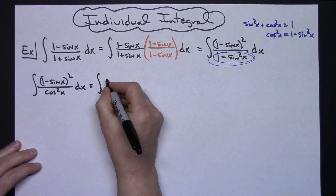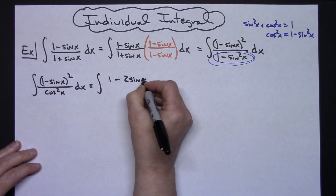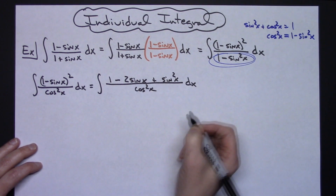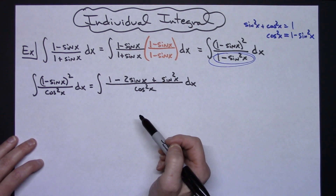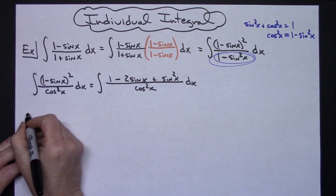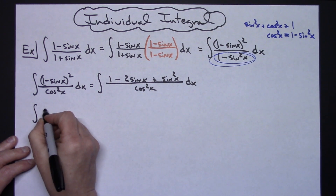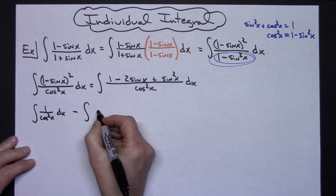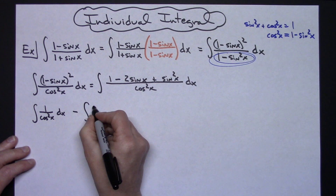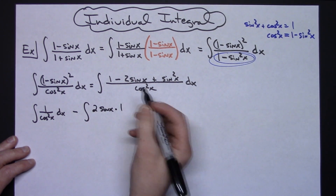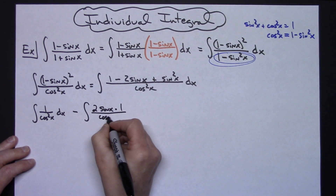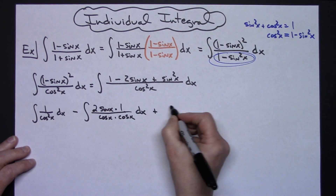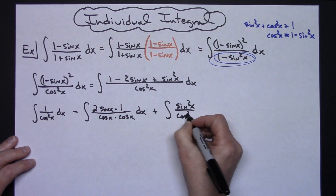Squaring the numerator gives 1 minus 2 sine x plus sine squared x, all over cosine squared x. Now I'm going to write these as three separate integrals. First, the integral of 1 over cosine squared x dx. Then, minus the integral of 2 sine x over (cosine x times cosine x) dx — writing it that way so I can see the trig identities. And then plus the integral of sine squared x over cosine squared x dx.